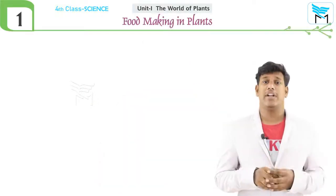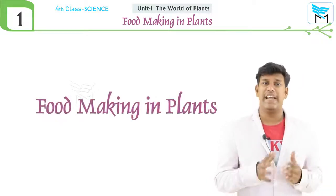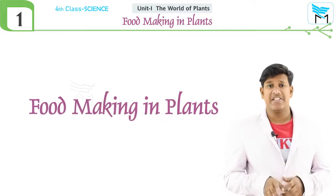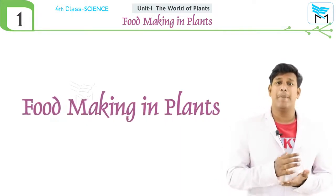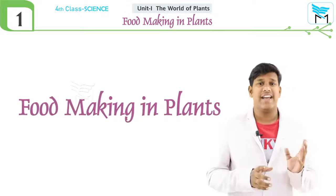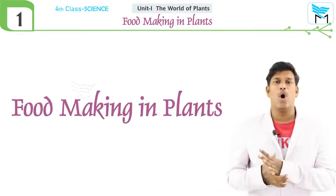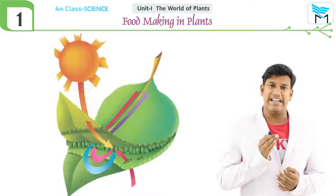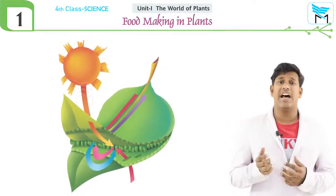Hi students, hope you all are doing good. In our first unit, 'The World of Plants,' we are going to discuss about food making in plants. First, you all know that plants can prepare their own food. Let us think: how can plants prepare their own food? Just have an idea around you — what is the color of all plants which you see? The plants are in green color. Have you ever thought why these plants are all in green color?